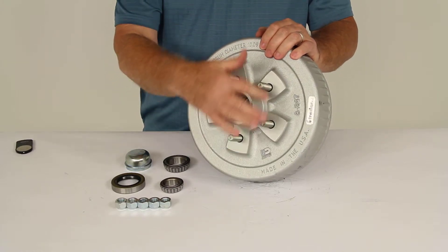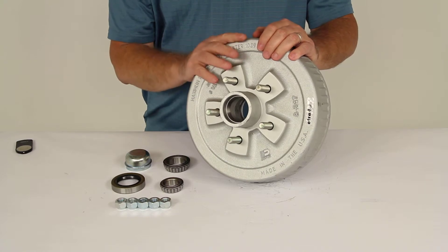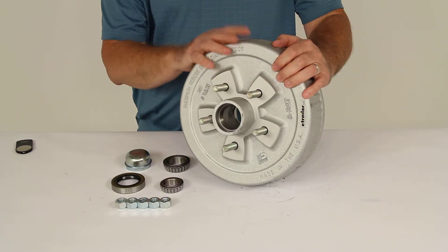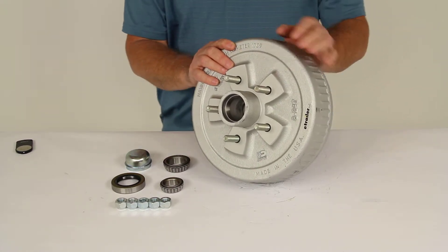The bolt pattern again is 5 on 4-1/2 inches. The wheel studs are a half-inch diameter. Now the weight capacity on one of these is 1,750 pounds. So when one of these is used with one on the other side, that will get you your 3,500-pound weight capacity.